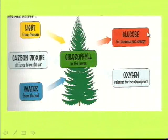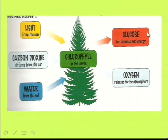Photosynthesis takes place in plants — it's what every plant does to produce its own energy. If we need fuel, we go down the shops and we buy crisps, Mars bars, sweeties, oranges, apples, pears and we eat them to get our fuel. The plant can't do that; it has to make its own fuel.